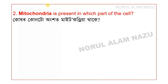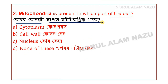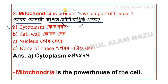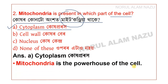Question 2: Mitochondria is present in which part of the cell? The question asks in which part of the cell mitochondria is found. It is present in the cytoplasm. Mitochondria is known as the powerhouse of the cell.